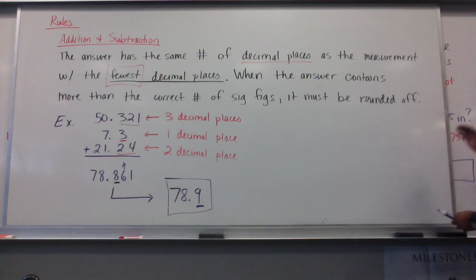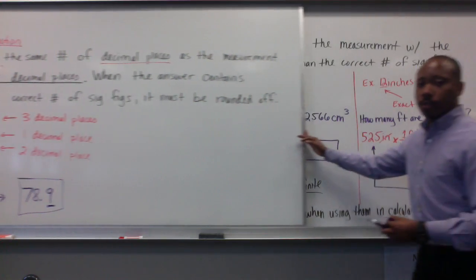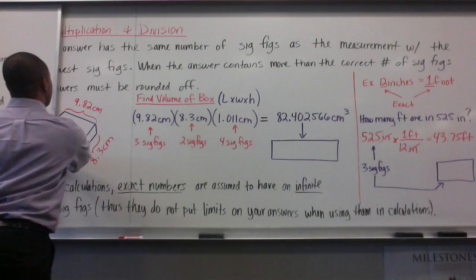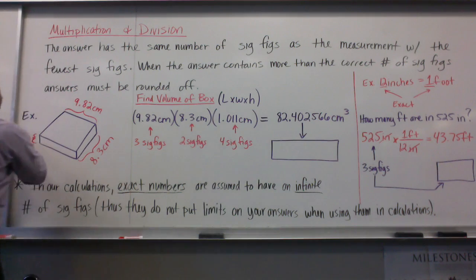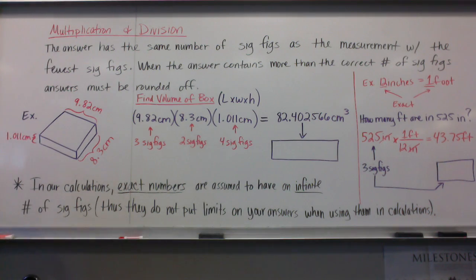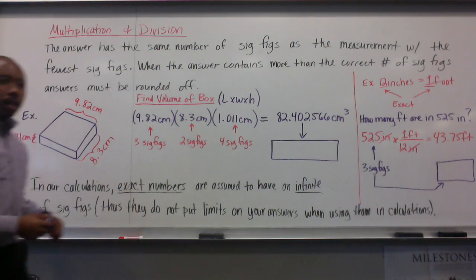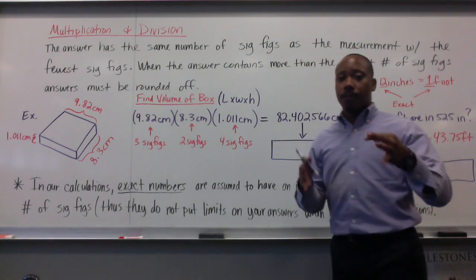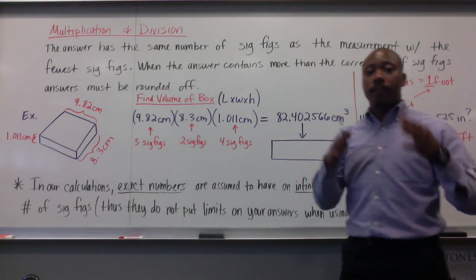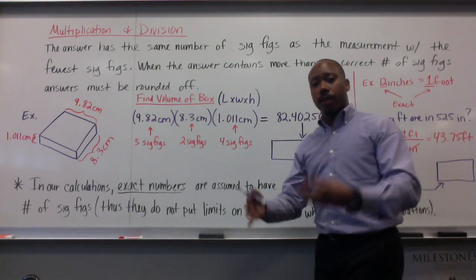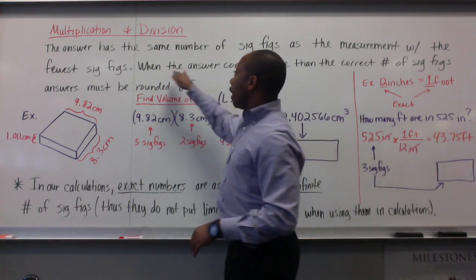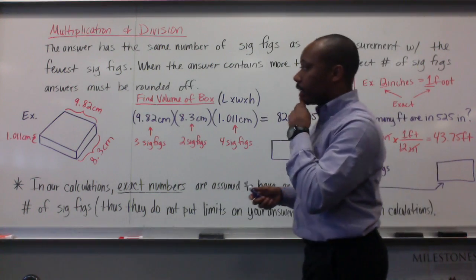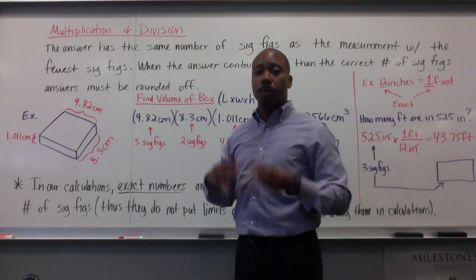Now, multiplication and division will have different rules. When multiplying or dividing, the answer has the same number of significant figures as the measurement with the fewest significant figures. When the answer contains more than the correct number of significant figures, the answer must be rounded.